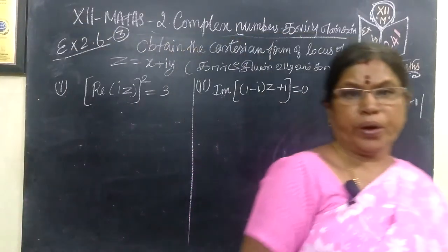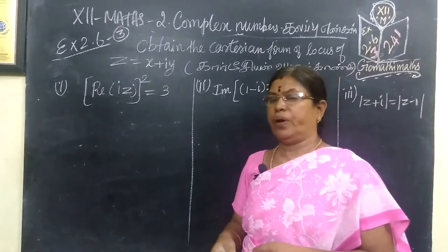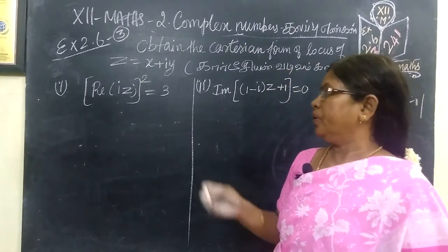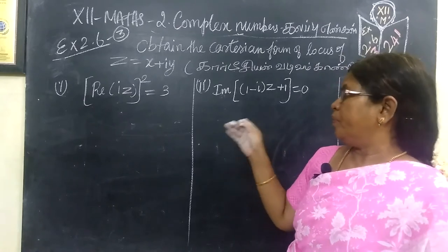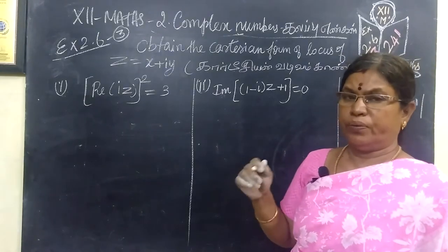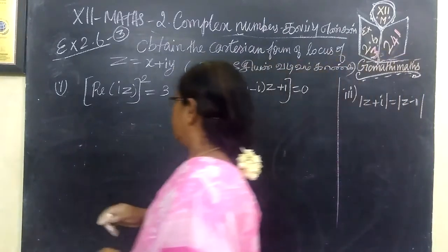12th math exercise 2.6 question number 3. You find the Cartesian form of the given question. It is given some real part and imaginary part. You want to find the Cartesian form.